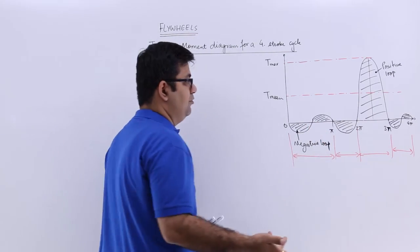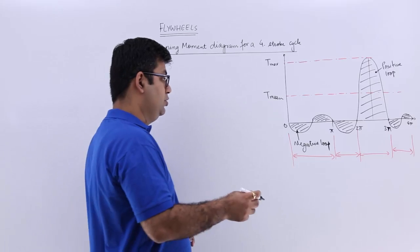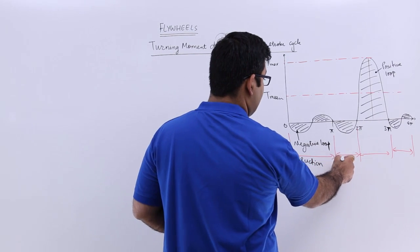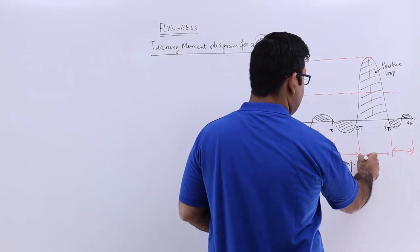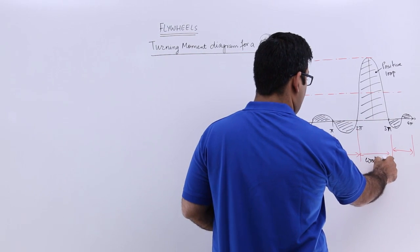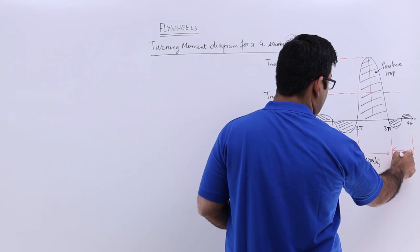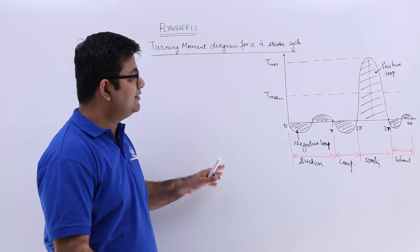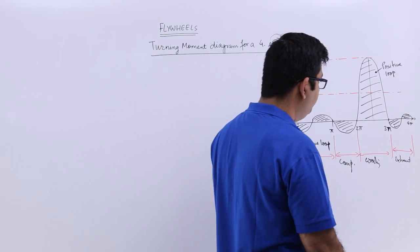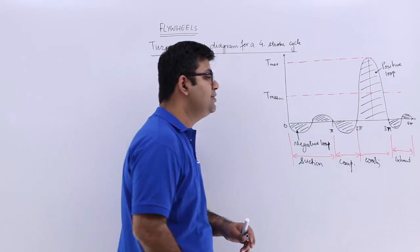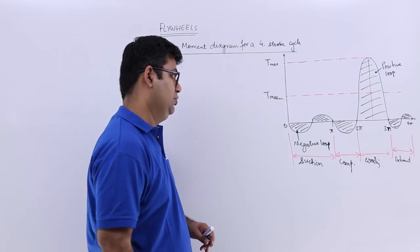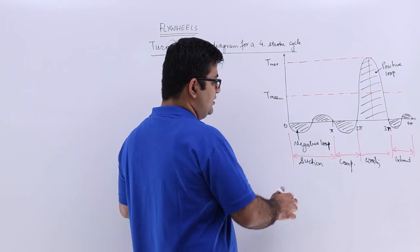In going from zero to π, you have your suction stroke. Then this would be the compression stroke, this is the working stroke, and this is the exhaust. The complete cycle is from zero to 4π, that is 720 degrees—two revolutions of the crankshaft.